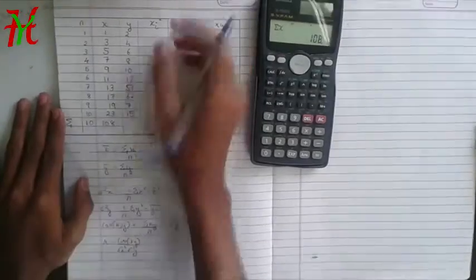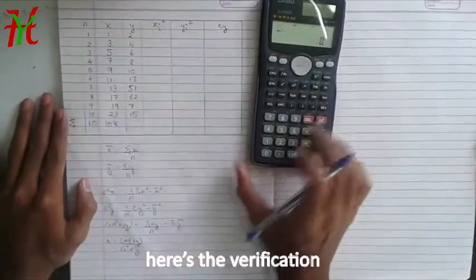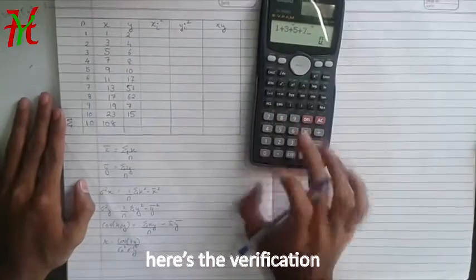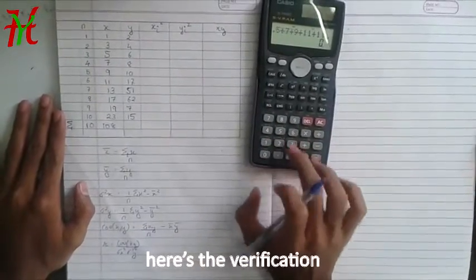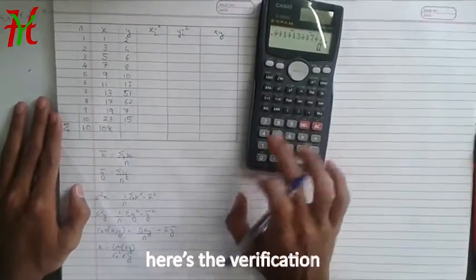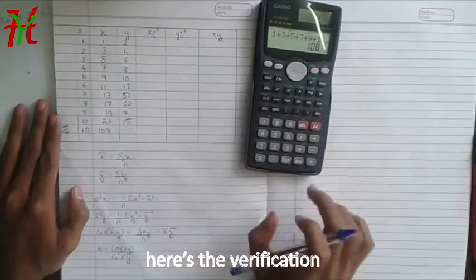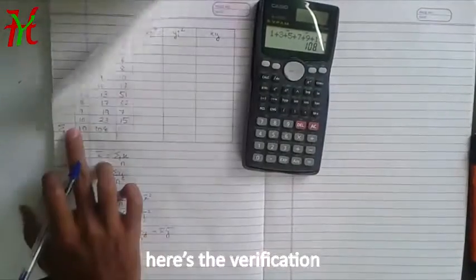Now similar I will verify this if it comes correct or not. 1 plus 3 plus 5 plus 7 plus 9 plus 11 plus 13 plus 17 plus 19 plus 23. And see 108. It's verified now. You're getting correct values.